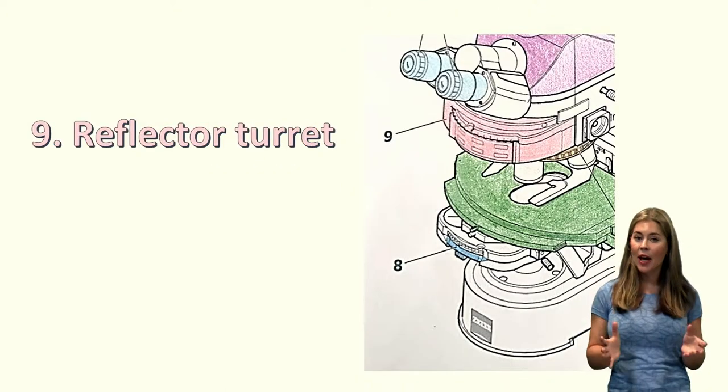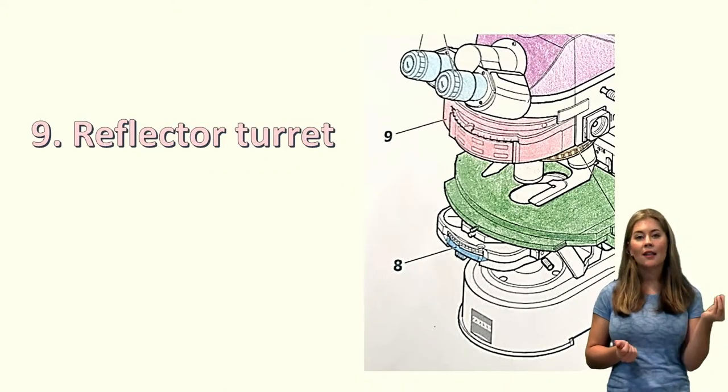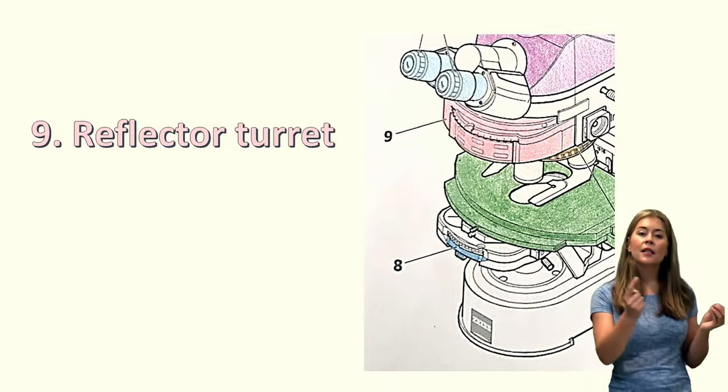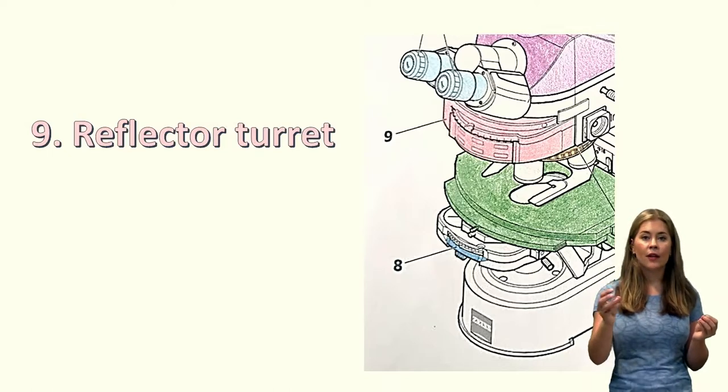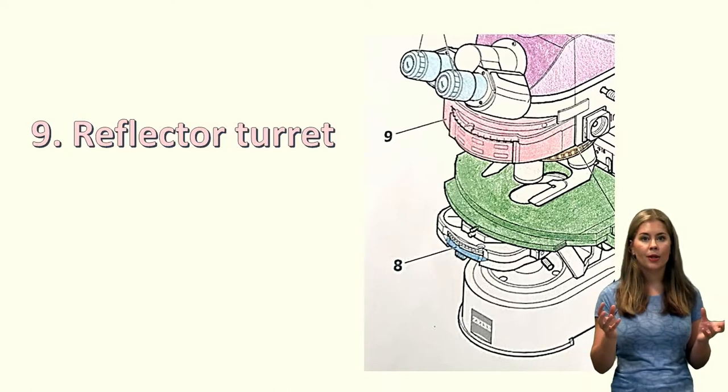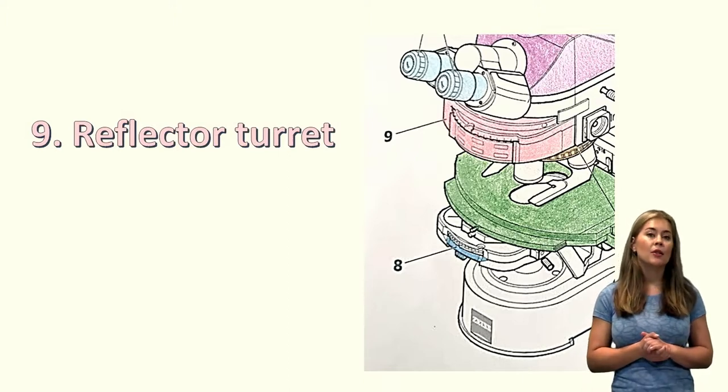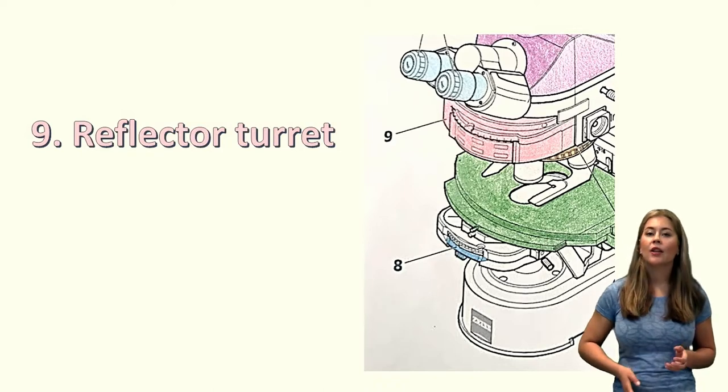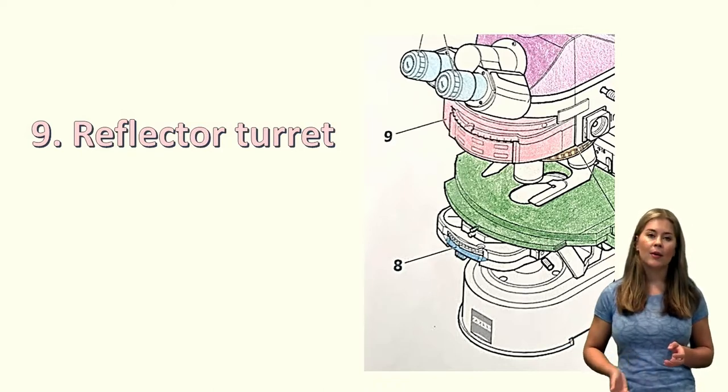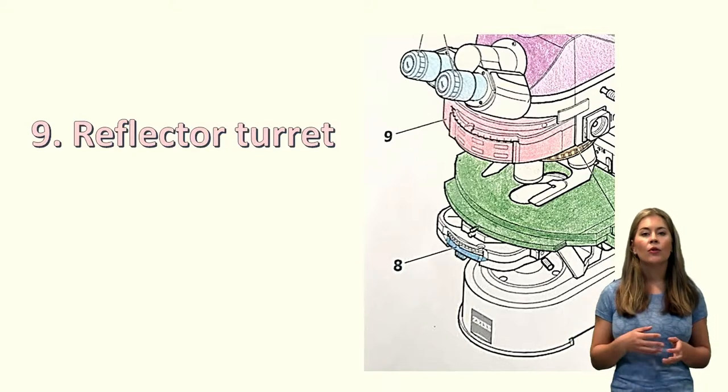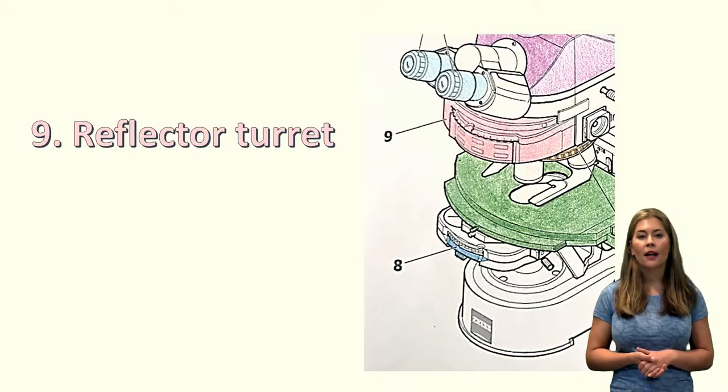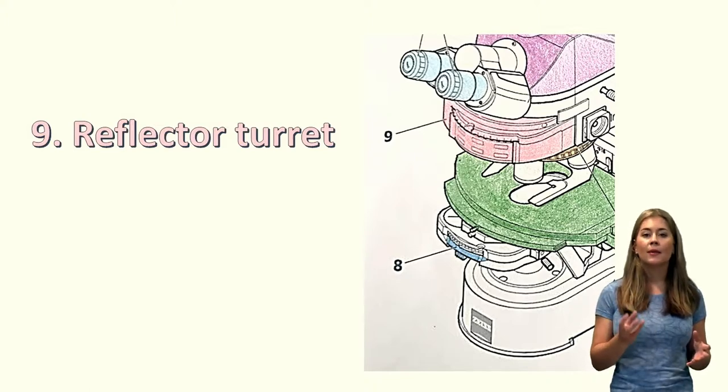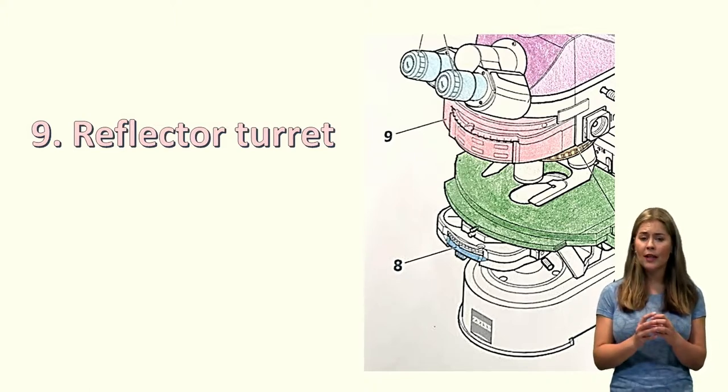Now the next thing is number nine which is the reflector turret. So inside this reflector turret we've got six different spaces that can hold six different reflectors. You probably won't need to use all of them. In bright fields we want to have one of those empty so the light can travel straight through. So it can be straight transmitted, because we're using transmitted light. But if you're using reflected light for a technique, for example DAPI staining to look at DNA, you would use the DAPI specific reflector within that reflector turret.